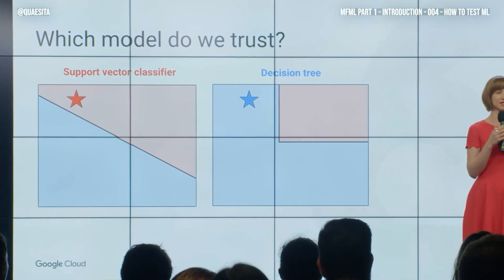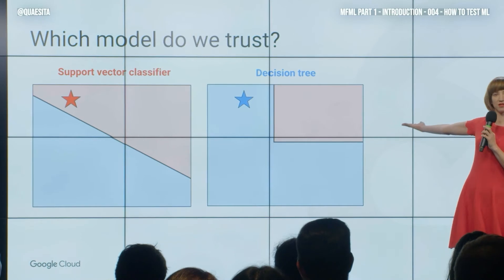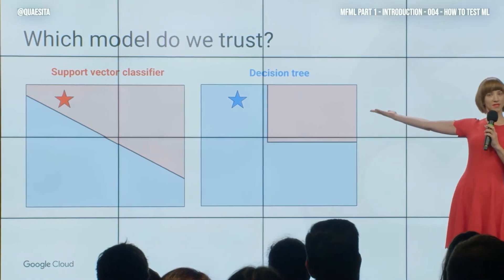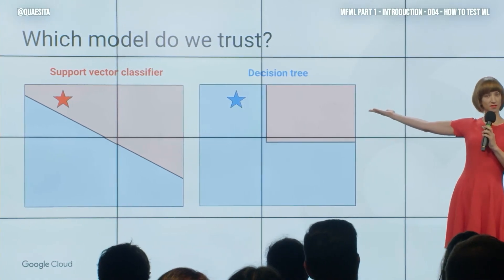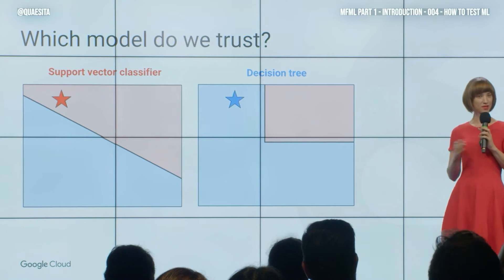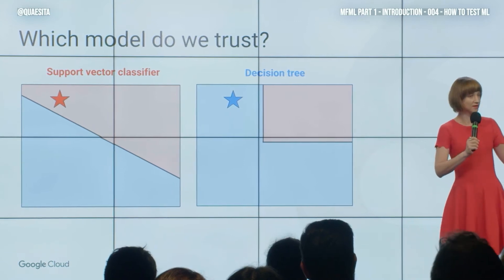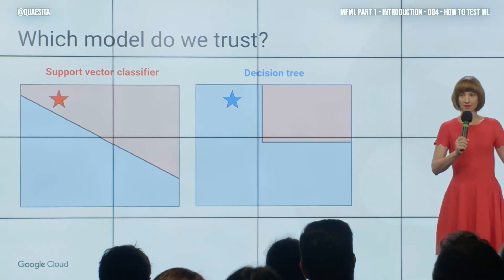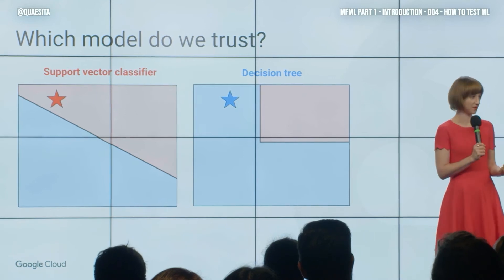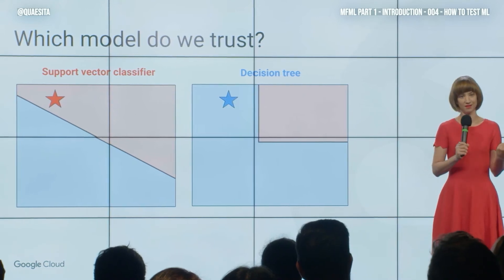So then you follow the textbook's advice and you end up in this situation where one of them says we'll like the bottle, one of them says we'll hate the bottle. They can't both be right. So which one of them is lying to us? Who is the imposter? How do we tell?